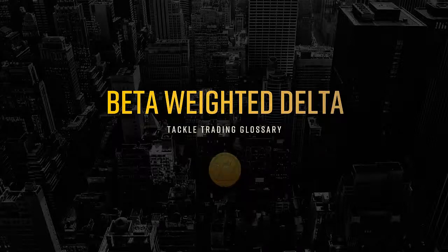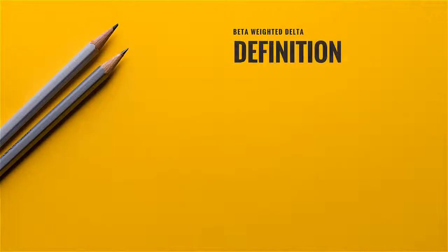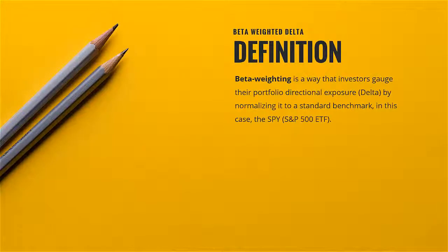Beta weighted delta, a Tackle Trading glossary video. By definition, beta weighting is a way that investors gauge their portfolio directional exposure, also known as delta, by normalizing it to a standard benchmark. In this case, the SPY, which is the S&P 500 ETF.